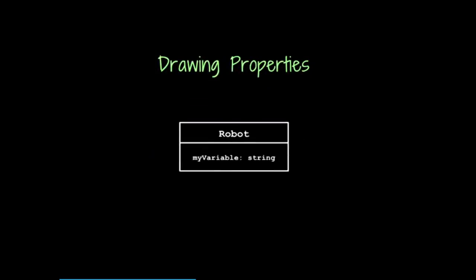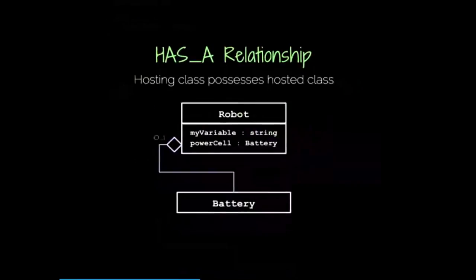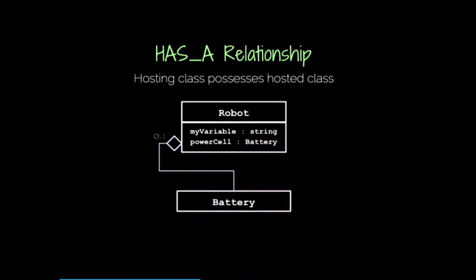When we draw properties, we draw them in another rectangle connected to the class rectangle — we write the name of the variable and optionally the type. If there are more properties, you write another one on each row underneath in the same property rectangle. Classes can be properties too — you can define a variable within one class that will actually hold another class. This is what we call a has-a relationship: the hosting class is said to possess the hosted class, and we draw that with a diamond arrow.